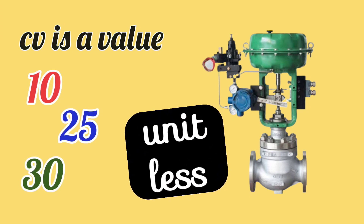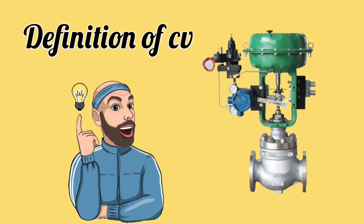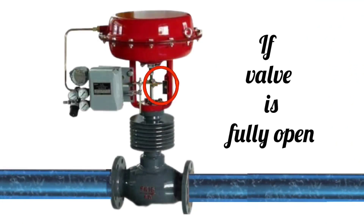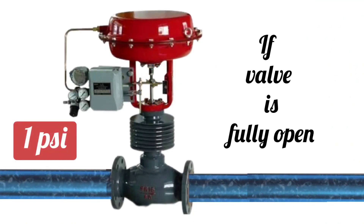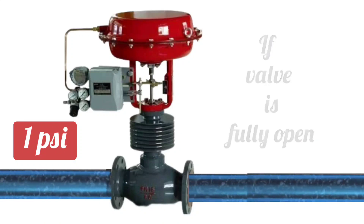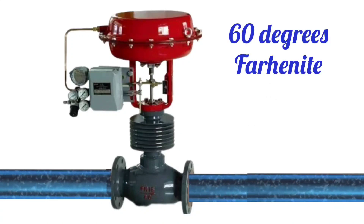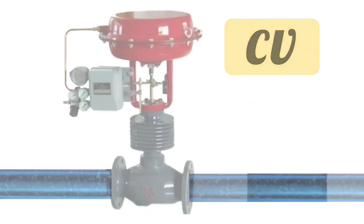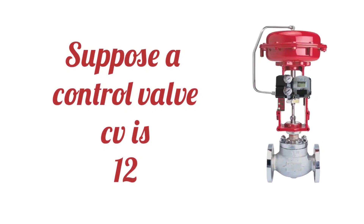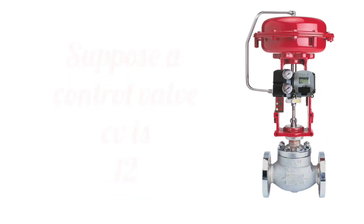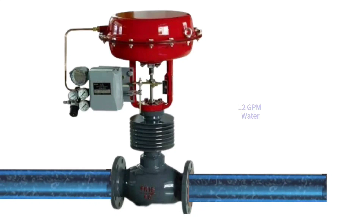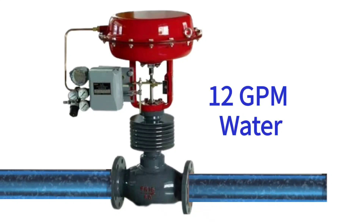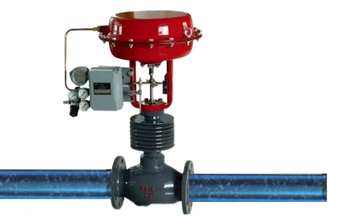If we see the definition of CV: when the valve is fully opened and there is a pressure drop of 1 psi, then at 60 degrees Fahrenheit, the gallons per minute of water flow is called CV. For example, if the CV of a control valve is 12, then in fully open condition the valve will pass 12 GPM of water, when there is a pressure drop of 1 psi and the temperature is 60 degrees Fahrenheit.